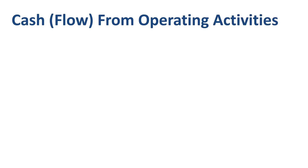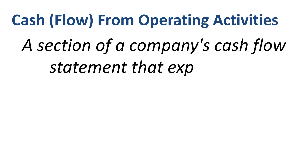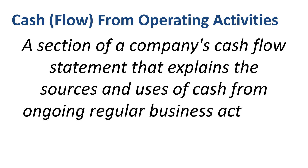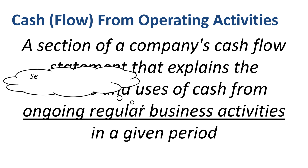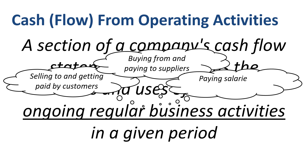The definition of cash flow from operating activities is a section of a company's cash flow statement that explains the sources and uses of cash from ongoing regular business activities in a given period. Ongoing regular business activities means selling products and services to customers and receiving cash from these sales, purchasing goods and services from suppliers and paying for them, paying salaries to employees, stuff like that.